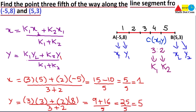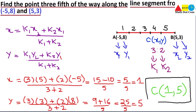So the coordinates of point C are x = 1 and y = 5, giving C(1, 5). This is how you can find the coordinates of a point that is 3/5 of the way along a line segment when you are given only the endpoints A and B. That's all from today's lecture — thank you.